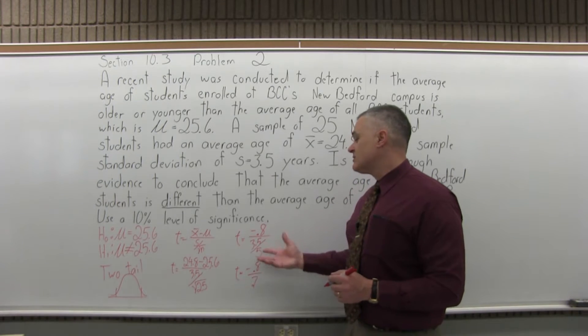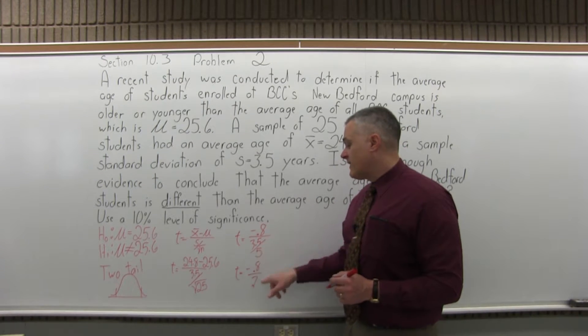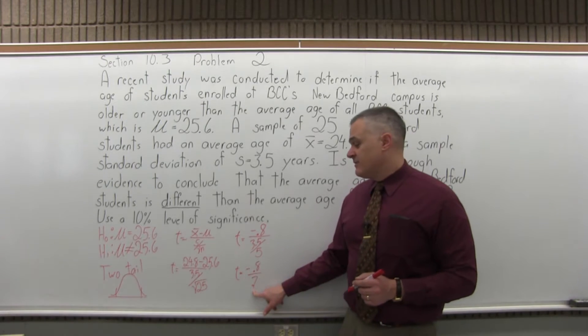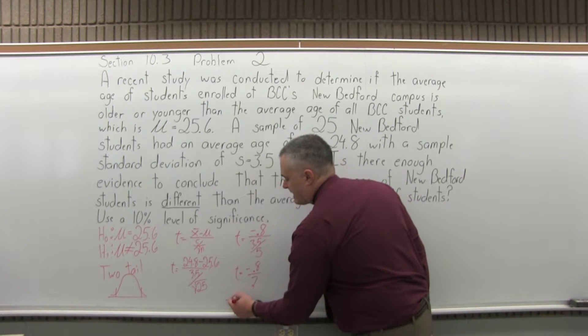t equals negative 0.8 over 3.5 divided by 5. I can do that without a calculator. I can see that it's 0.7. If you don't see it easily, or you think it's 0.7 but you're not positive, just take a calculator, 3.5 divided by 5 equals, and you'll see, sure enough, it is 0.7.